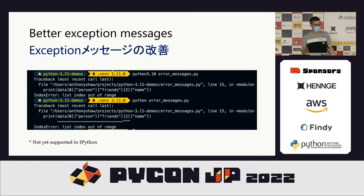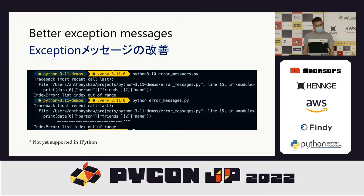This improvement applies in lots of different places, not just with index errors. It's really nice for beginners, but actually it's just nice for everybody. It also suggests where you've made typos — so if you write .name but spell it wrong, it will say 'AttributeError: you wrote this, did you mean this?' So it actually corrects your spelling for you, which is really cool.